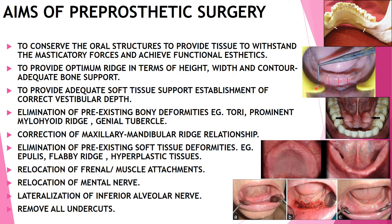If the vestibular depth is not appropriate or is shallow, you need to do pre-prosthetic surgery to get the correct vestibular depth. The next aim is elimination of pre-existing bony deformities — if tori are present, or the mylohyoid ridge is prominent, or there are genial tubercles, pre-prosthetic surgery is done to eliminate them because the denture won't sit properly in such cases. If the mylohyoid ridge is prominent, the denture won't be retentive or stable.